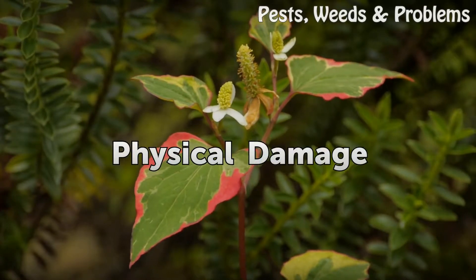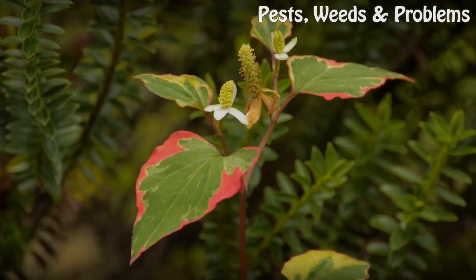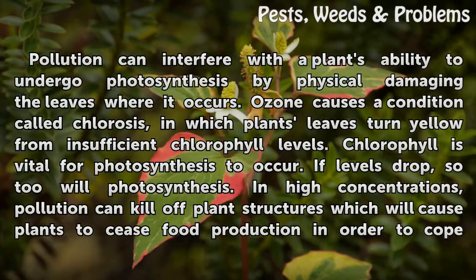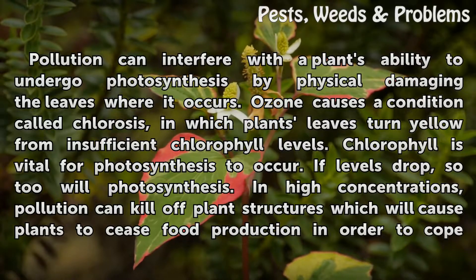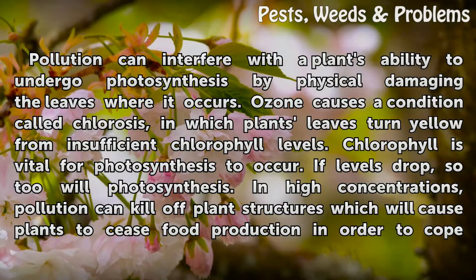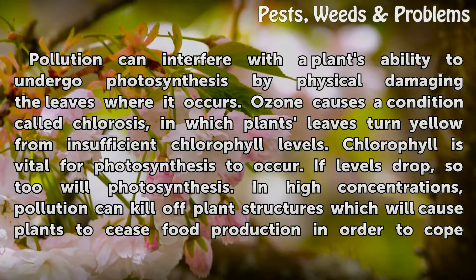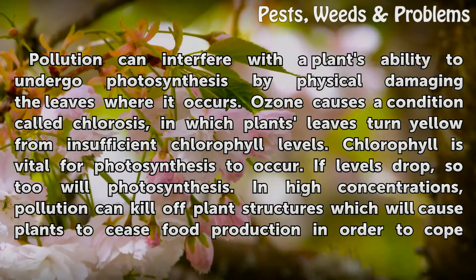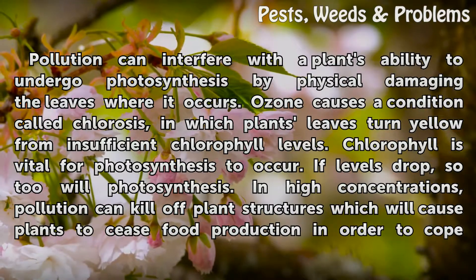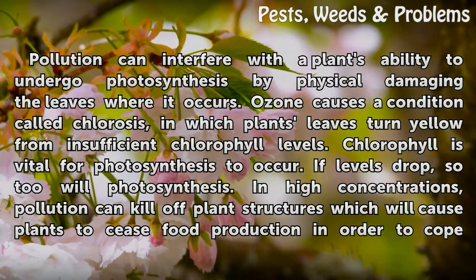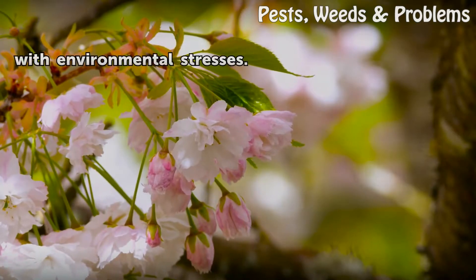Physical Damage: Pollution can interfere with a plant's ability to undergo photosynthesis by physically damaging the leaves where it occurs. Ozone causes a condition called chlorosis, in which plants' leaves turn yellow from insufficient chlorophyll levels. Chlorophyll is vital for photosynthesis to occur — if levels drop, so too will photosynthesis. In high concentrations, pollution can kill off plant structures, causing plants to cease food production in order to cope with environmental stresses.